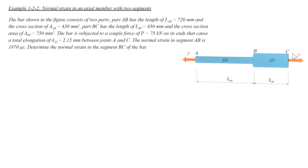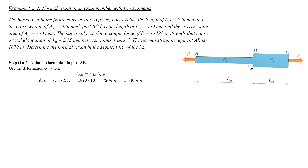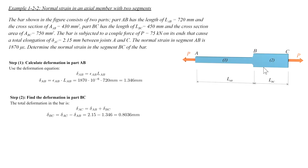In order to solve that, we are going to start with determining how much is the deformation in the first segment. Knowing strain and length, we can determine that deformation. To find deformation in segment 2, we subtract the deformation in segment 1 from the total deformation of the system. Once the deformation in segment 2 is determined, we can determine strain in that segment by dividing the deformation over the length.